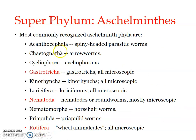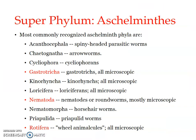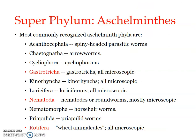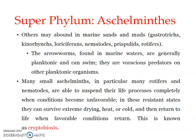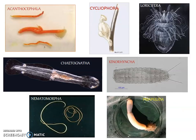These are a few of the Aschelminthes phyla. Phylum Acanthocephala — they are known as spiny-headed parasitic worms. You can see a small spiny structure at one of the ends, which is why it is known as spiny-headed parasitic worms. Then we have the Chaetognatha — arrow worms — which are found in marine waters and belong to the predatory groups.